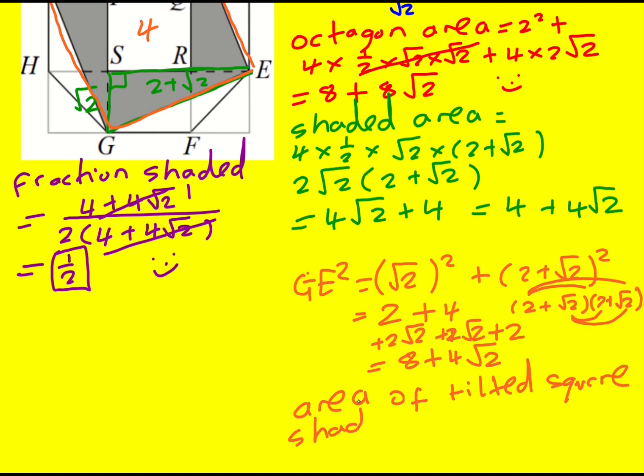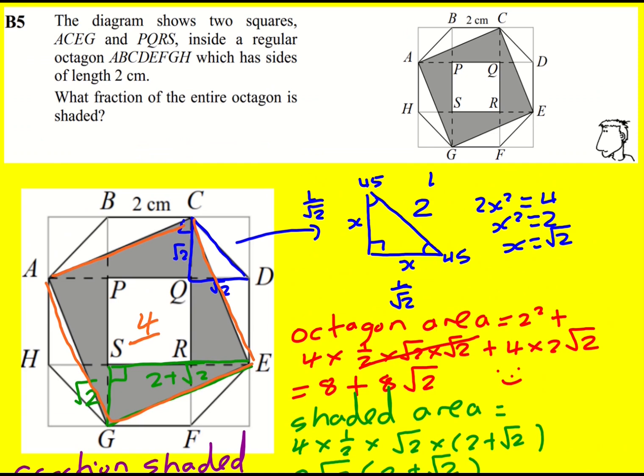So the shaded area will be this minus 4, as I discussed before, and that's another way that we can get 4 plus 4 root 2. So yeah, it's a bit more complicated. I think the green method is better, but hey, it's there as an alternative.